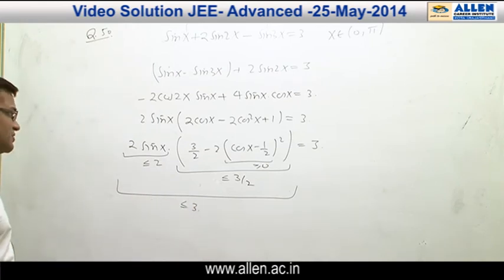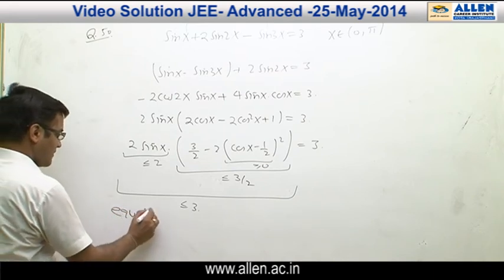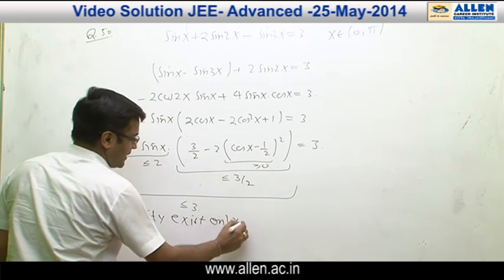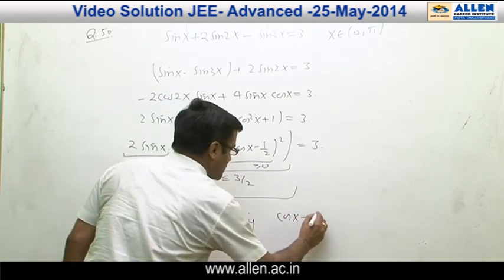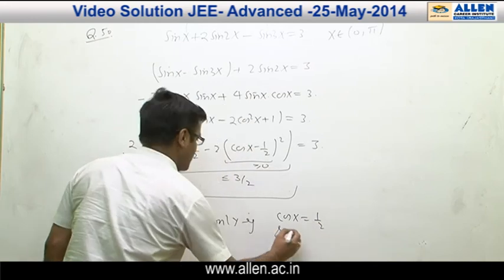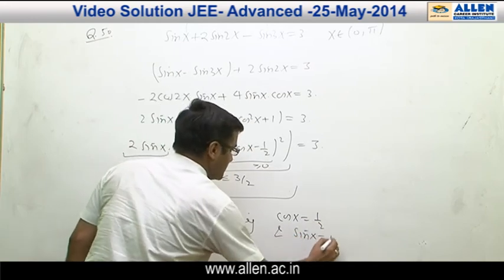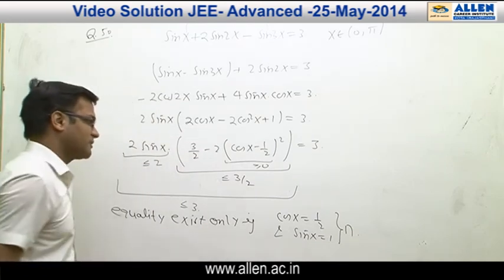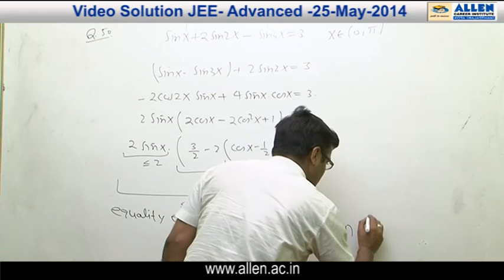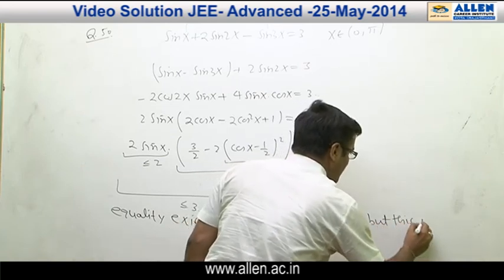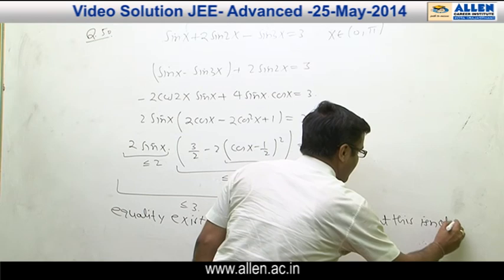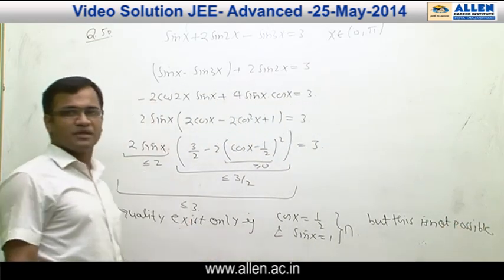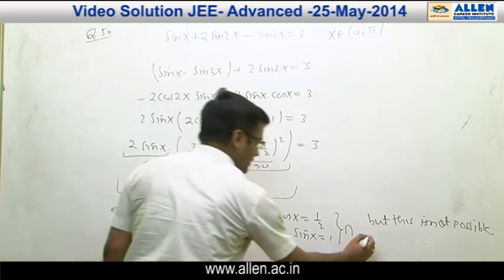Equality exists only if cos x = 1/2 and sin x = 1 simultaneously. But these two conditions cannot hold simultaneously for any x. Therefore there is no solution, and the correct answer is option D.